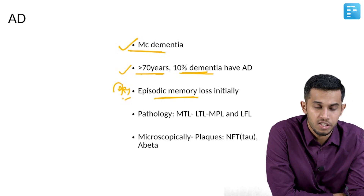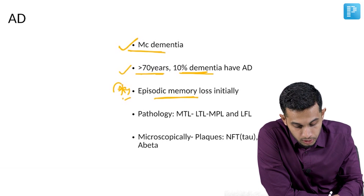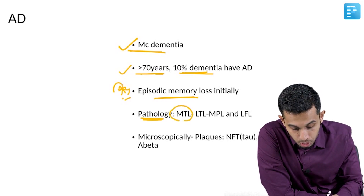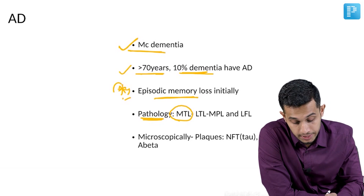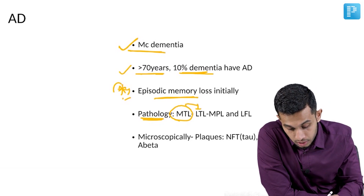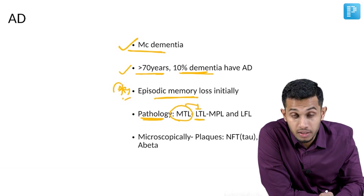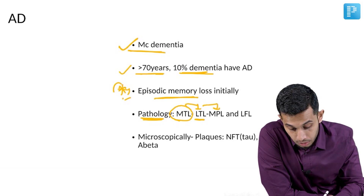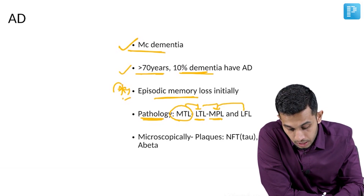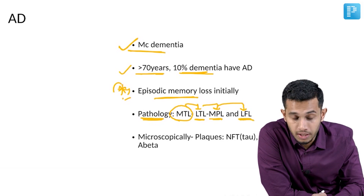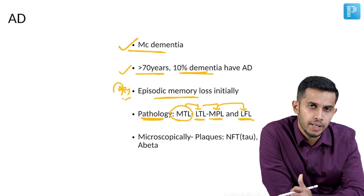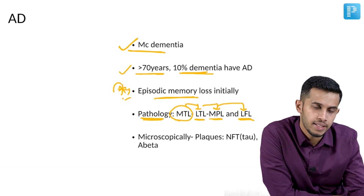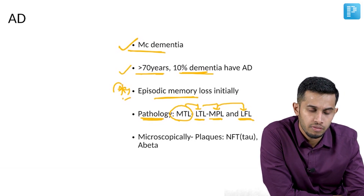Their long-term memory will be good initially. The pathology begins in the medial temporal lobe, which is the house for recent memory. Then it goes to the lateral temporal lobe, then to the medial parietal lobe, and then to the lateral frontal lobe. This is how the pathology spreads — mainly starting with the medial temporal lobe and ending at the lateral frontal lobe.